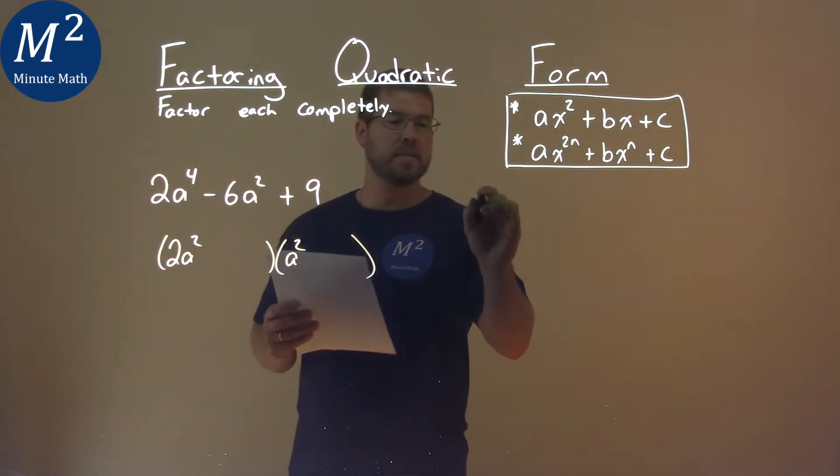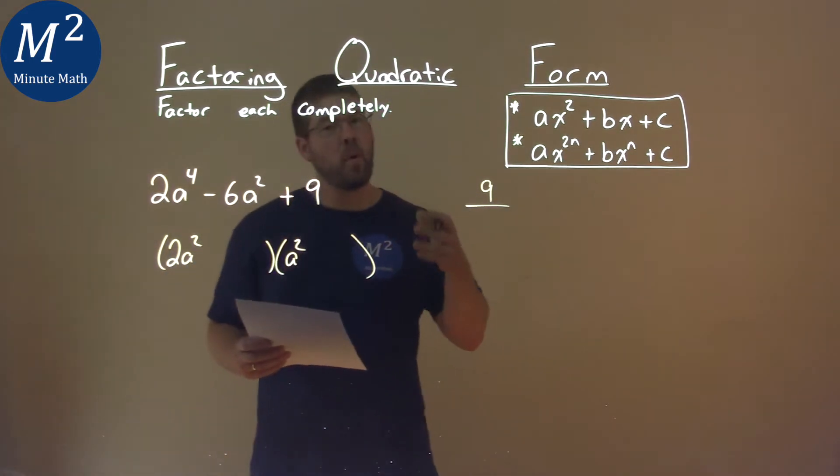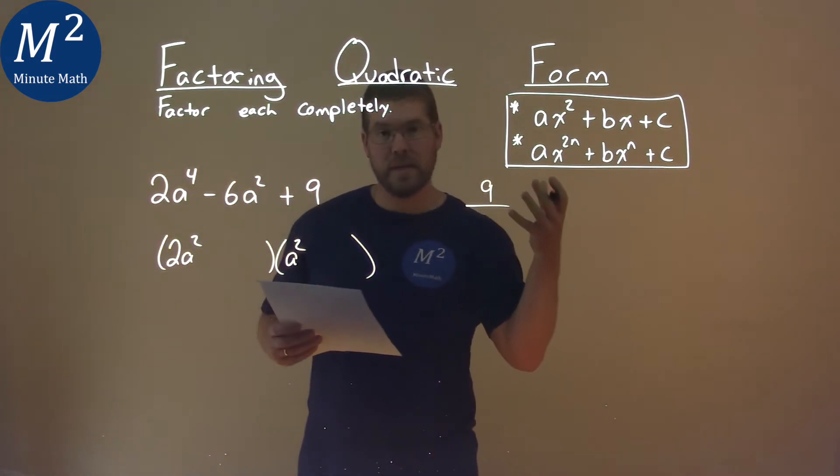We then take our c value which is 9 and since our b value is a negative number we need to find two numbers that multiply to be 9 but they both have to be negative.